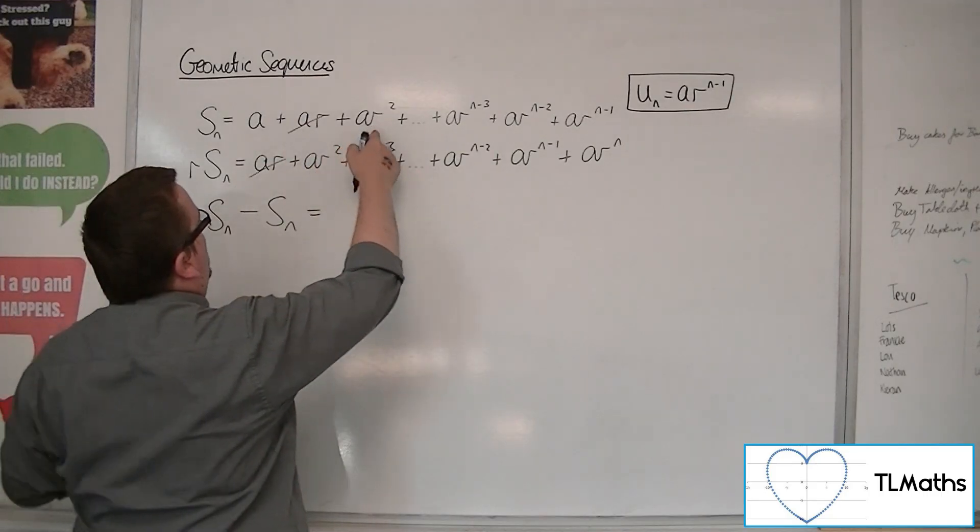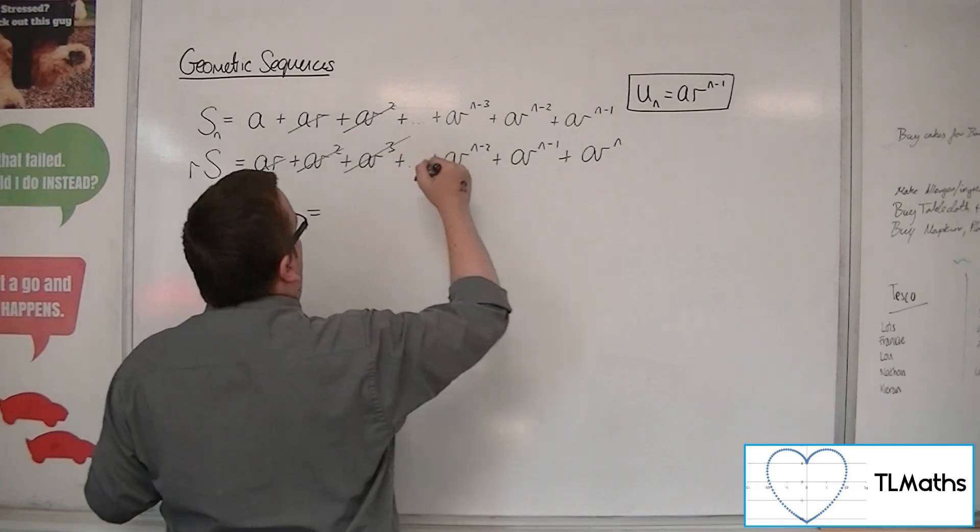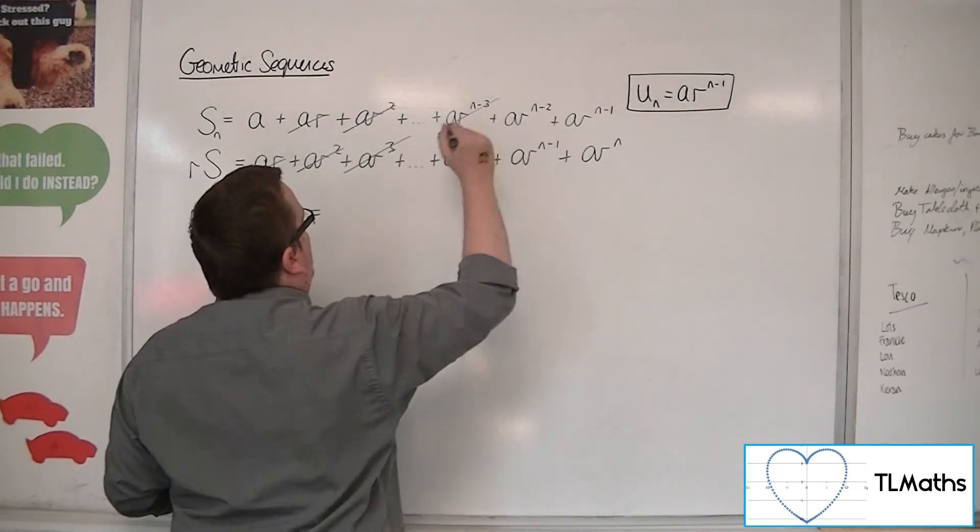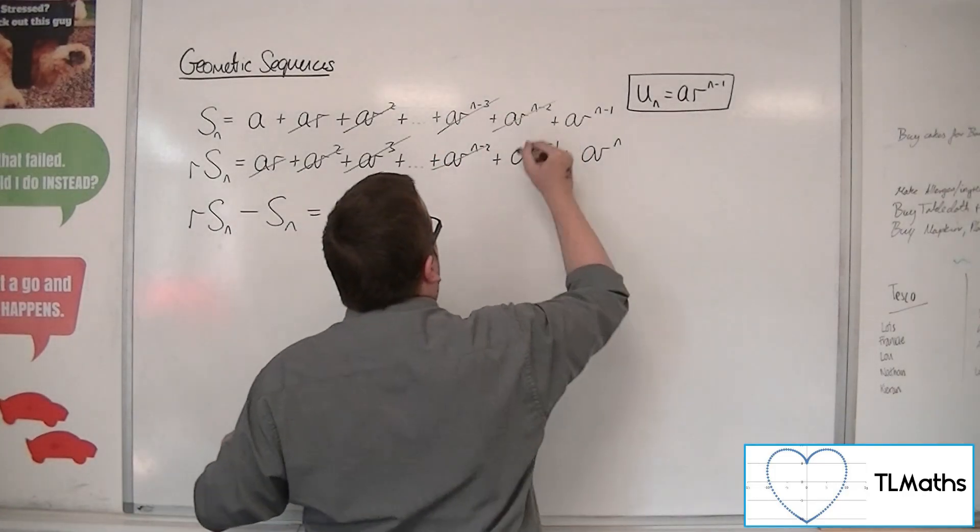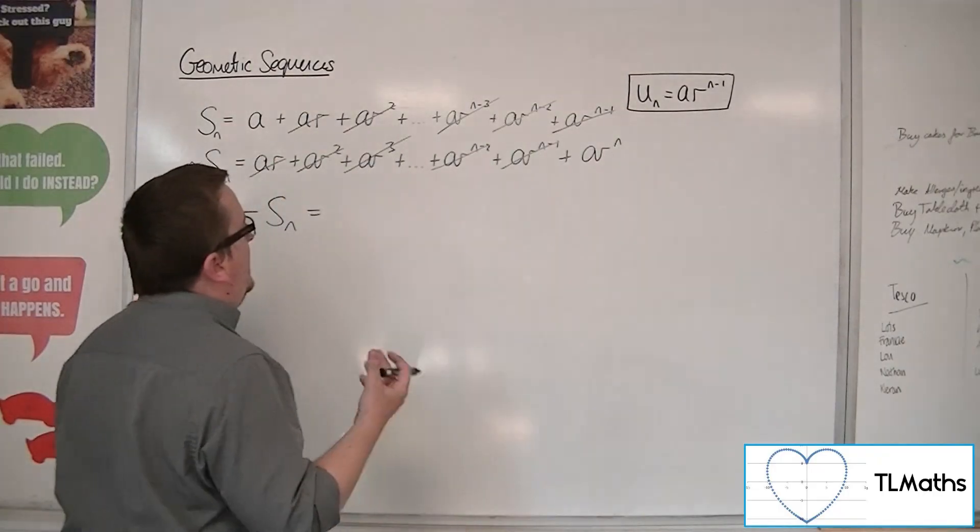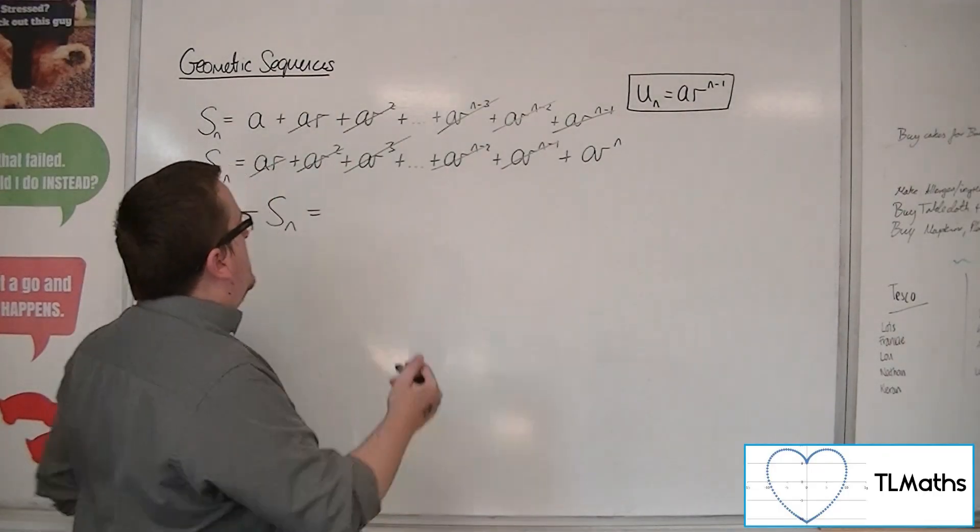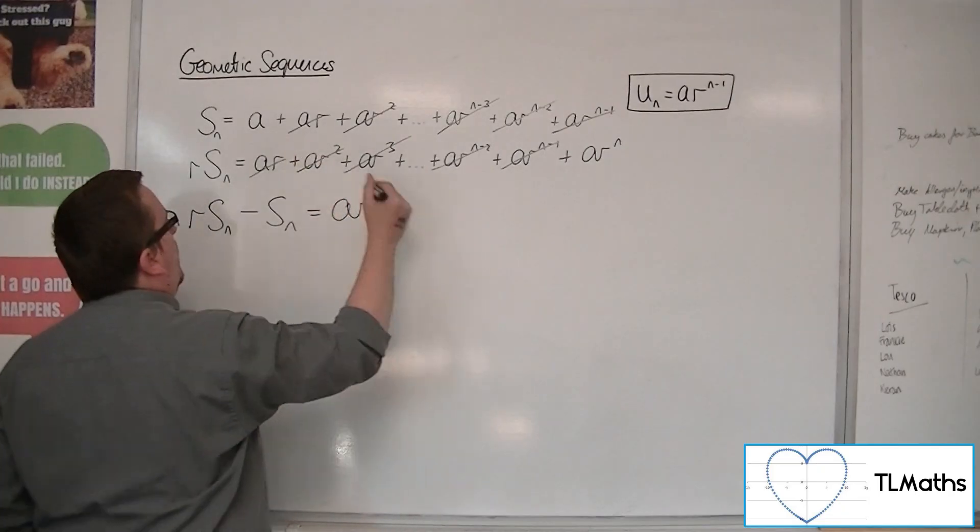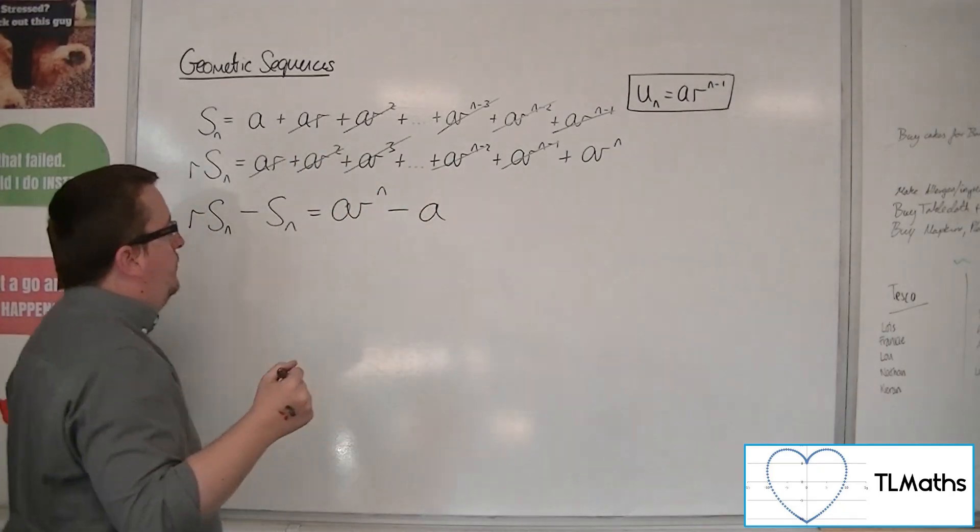The cubes will cancel, the ar to the n minus 3 will cancel, they'll cancel, they'll cancel. And I'll be left with ar to the n take away a.